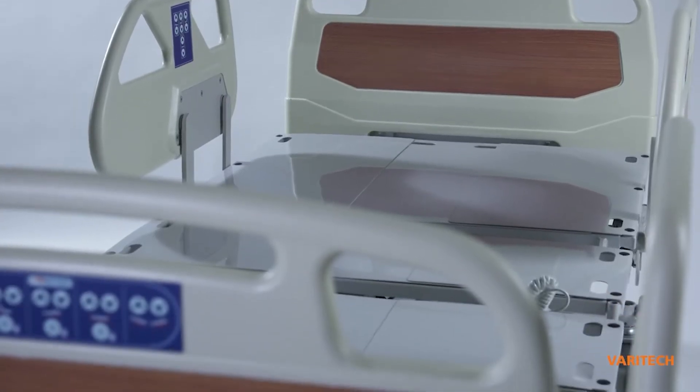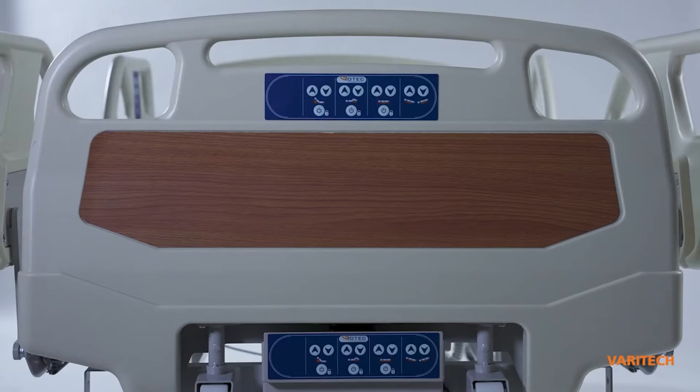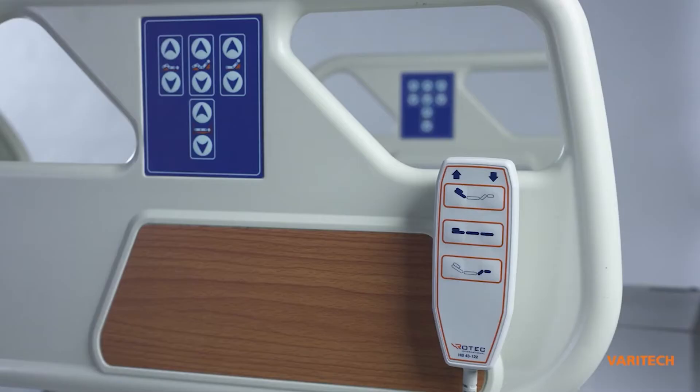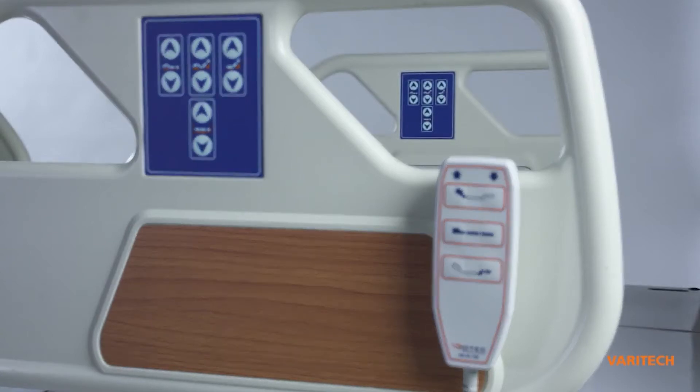It can be equipped with a headboard and footboard in composite or melamine. The Varitek can be equipped with a patient remote control and a patient control integrated into the bedside rails inside and outside.